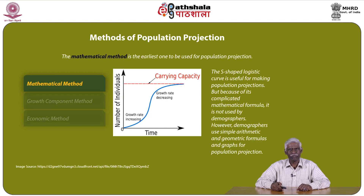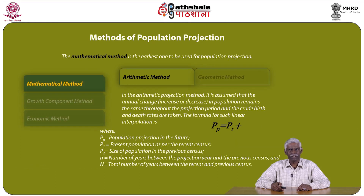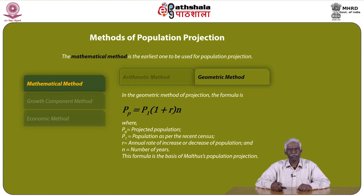In the arithmetic projection method, it is assumed that the annual change — either increase or decrease — in population remains the same throughout the projection period, and crude birth and death rates are also taken into consideration. The formula for such linear interpolation is: P(p) = P1 + [(P1 - P2) / N] × n, where P(p) is the projected population, P1 is the present population per the recent census, P2 is the population in the previous census, n is the number of years between the projection year and the previous census, and N is the total number of years between the recent and previous census.